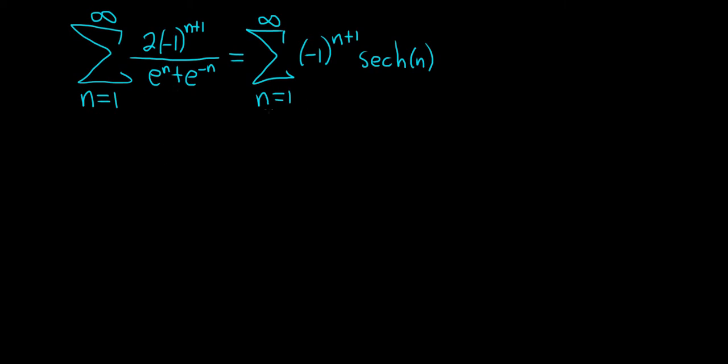So you see here, the series is written in two ways. This function here, 2 over e to the n plus e to the negative n, this is the hyperbolic secant function.